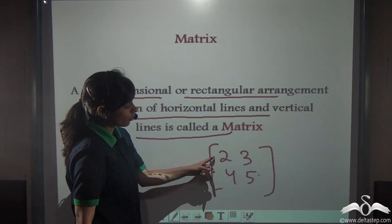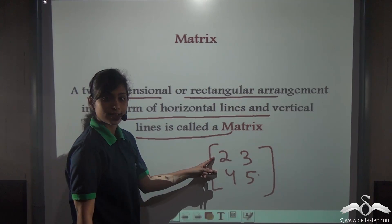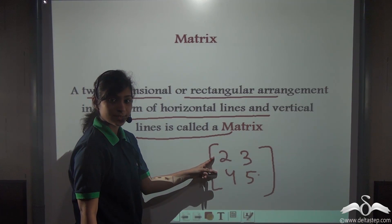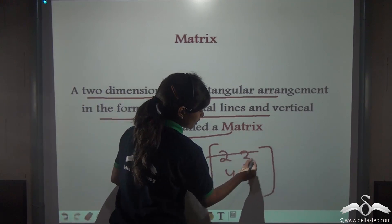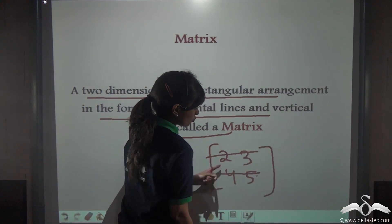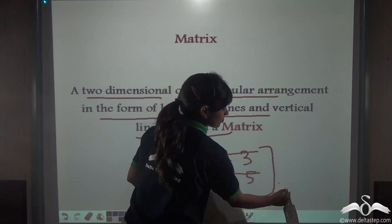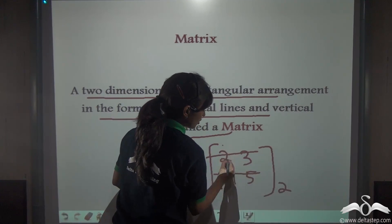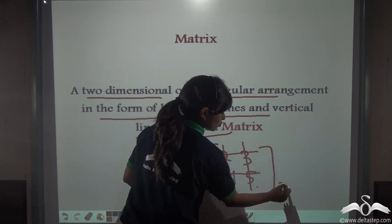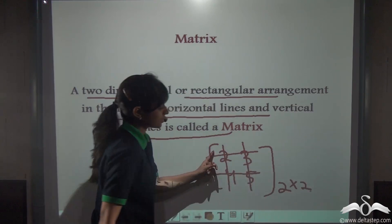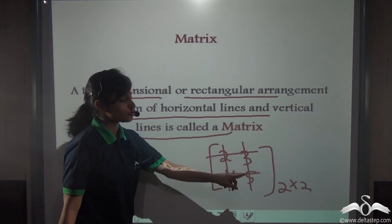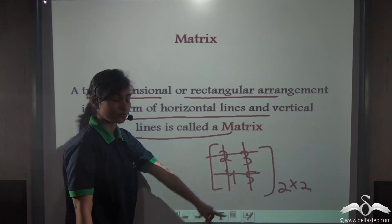Can you tell me how many rows and columns are there in this matrix? There are two rows and two columns. So this matrix is of the order 2 by 2.